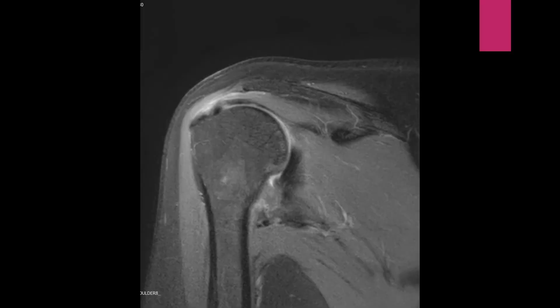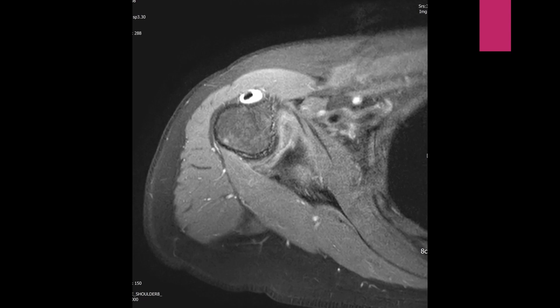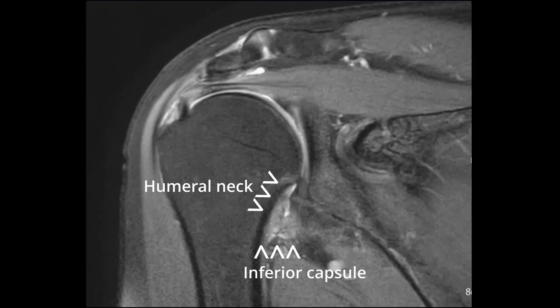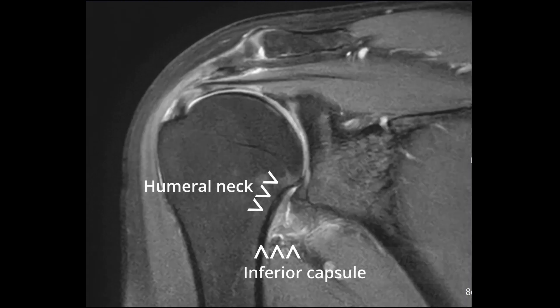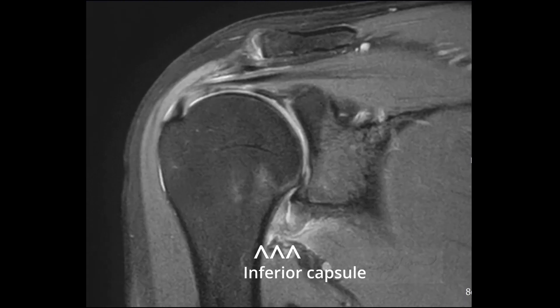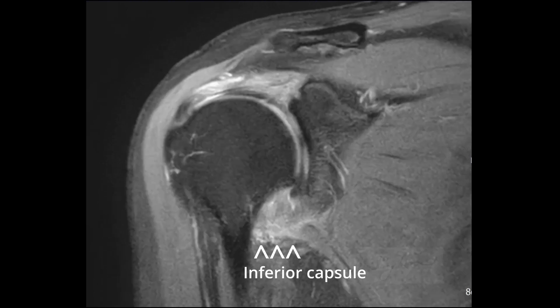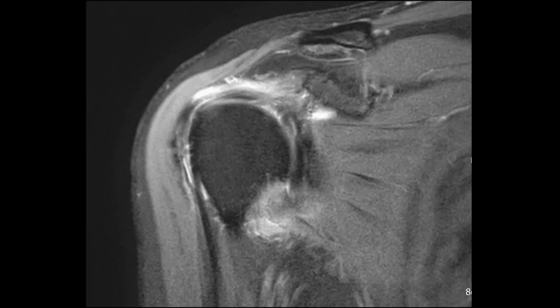Next, I'll show you the coronal view of the pathological inferior capsule. Do you notice any differences? Correct — the inferior capsule appears thicker and seems to attach more broadly across the areas of the anatomical and surgical necks. Now let's observe the axial view of the same area. The large, thick area is positioned on the anteromedial aspect of the humerus neck. It is easy to understand the pathology on the coronal image, but for interventional practice, you must be familiar with the axial and sagittal images.